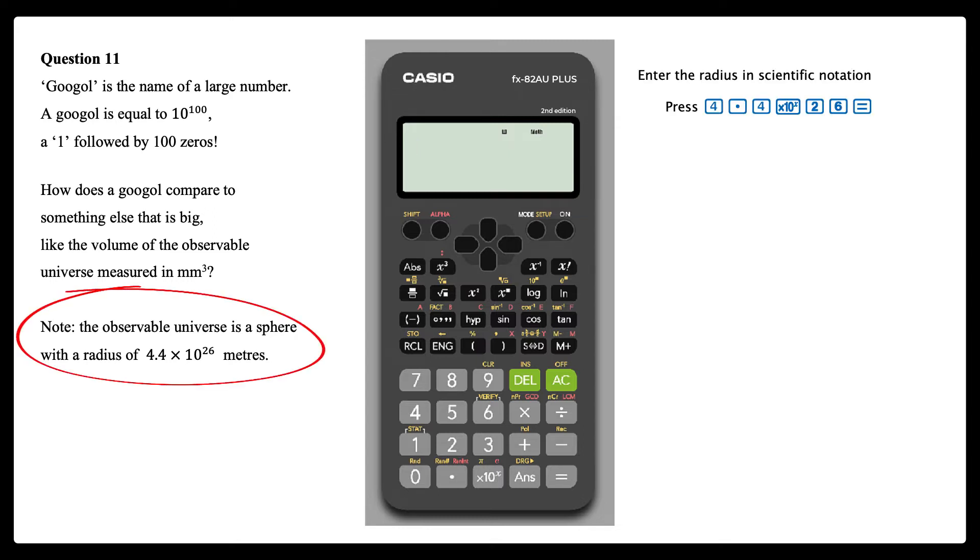To enter the radius of the observable universe, use the x10 to the power of x key to enter it in scientific notation.